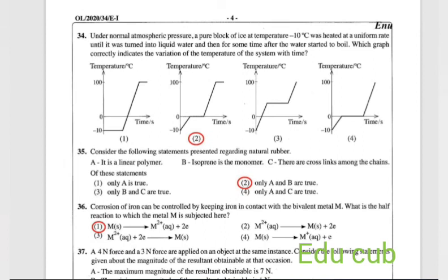Question 34: a pure block of ice at temperature minus 10 Celsius was heated at a uniform rate until it was turned into liquid water, and then for some time after water started to boil. Which graph correctly indicates the variation of temperature of the system with time? Very simple. When considering boiling of the water, there is water vapor at 100 Celsius. Answer is the second one.